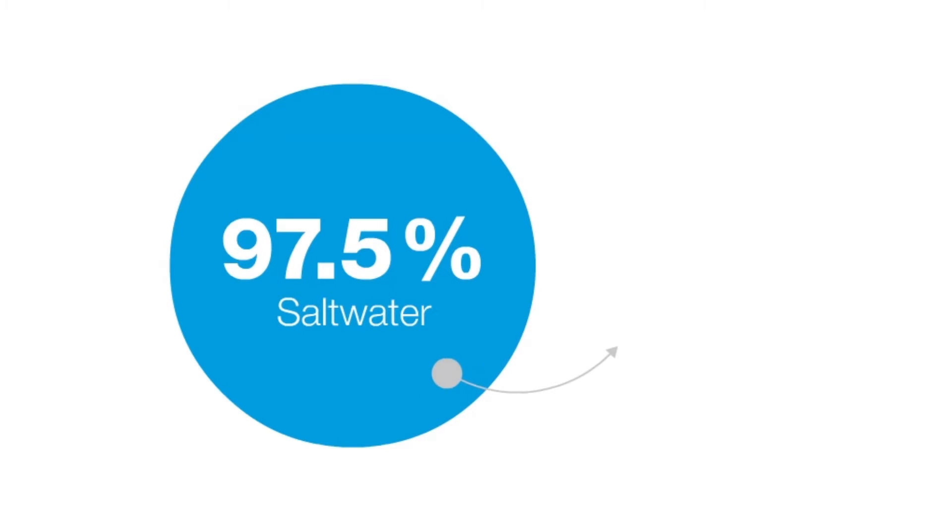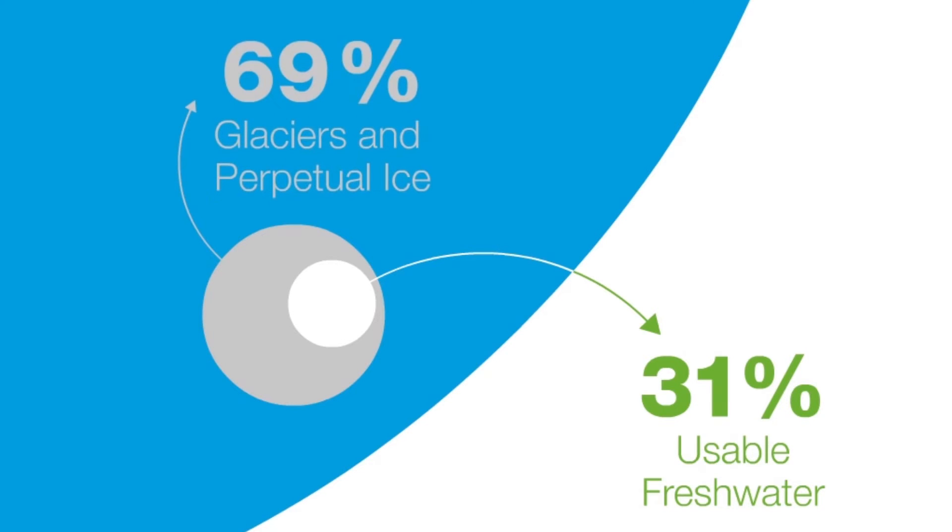Only a small amount, 2.5%, is freshwater. Of this small percentage, only about 31% is directly accessible. The rest is bound in glaciers and the perpetual ice of the polar caps.